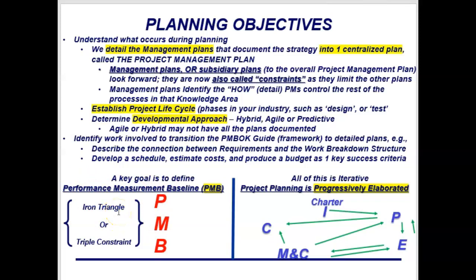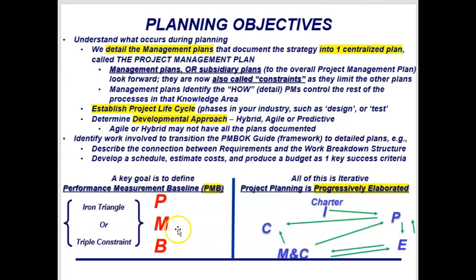The iron triangle can be discussed individually as scope baseline, schedule baseline, and cost baseline, or collectively as the performance measurement baseline, or PMB. Progressive elaboration means that even though we have initiating, planning, executing, controlling, and closing — IPEC — we may move flexibly: from initiating to planning to closing if it's not feasible, or from initiating to planning to executing and then back and forth between executing and monitoring and controlling as we learn and approve changes.